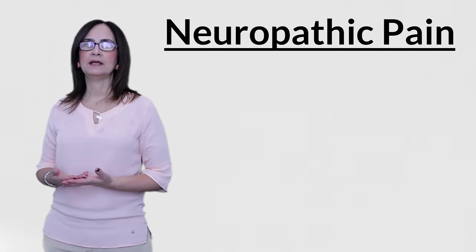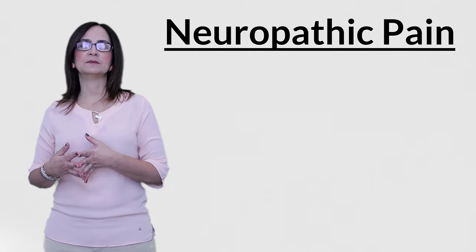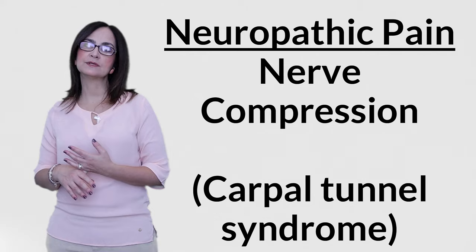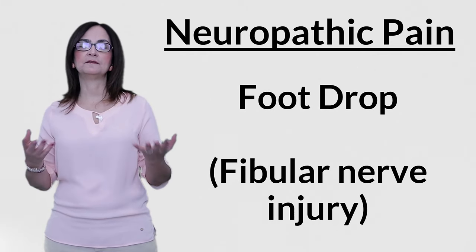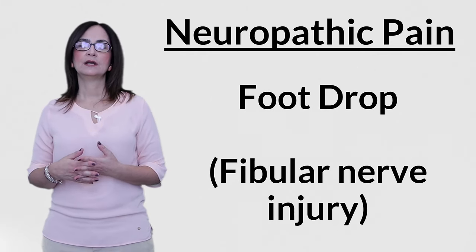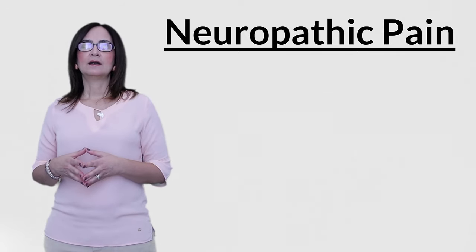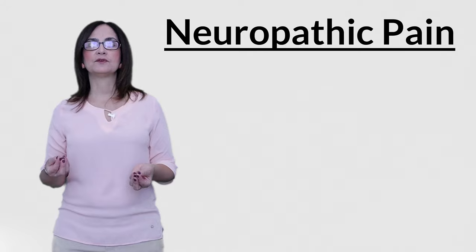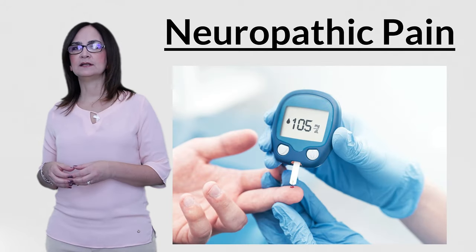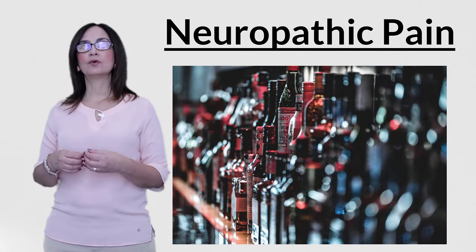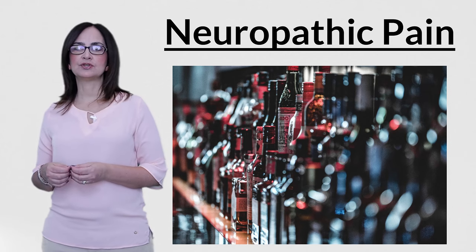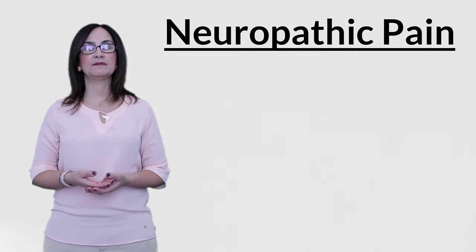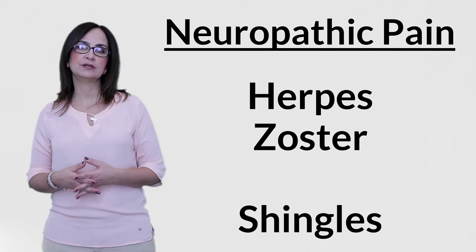Common causes of neuropathic pain affecting the peripheral nerve system include nerve compression — for example, carpal tunnel syndrome, or a foot drop caused by a fibular nerve injury close to the knee. Metabolic diseases can also affect peripheral nerves, such as diabetes-related nerve damage, alcohol-related nerve damage, vitamin deficiency like vitamin B12, and viral infections like herpes zoster or shingles.